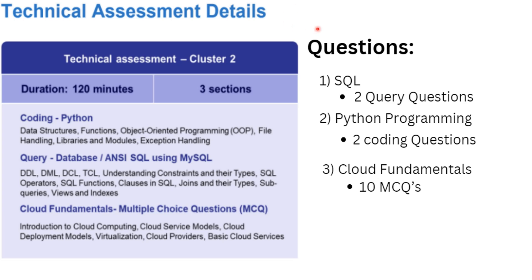Hey guys, welcome back to our channel. In this video we are going to discuss all the questions asked in the Cognizant technical assessment on 30th of September in cluster 2. There are a total of 14 questions asked, which belong to three different sections. Cluster 2 includes section 1: coding in Python, section 2: querying databases using ANSI SQL and MySQL, and section 3: cloud fundamentals, which has multiple choice questions.